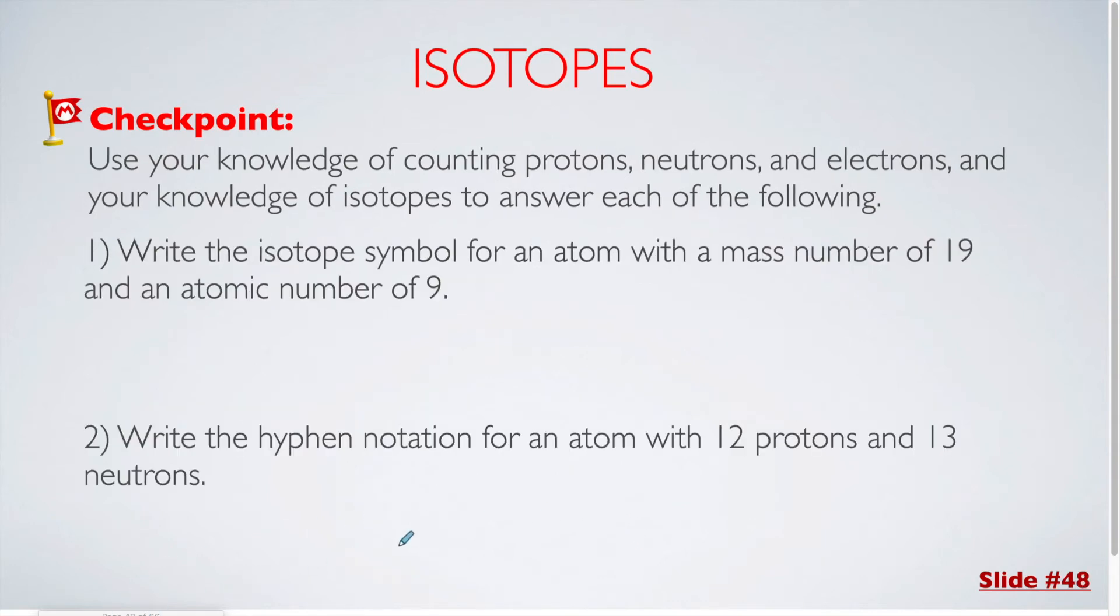For our next checkpoint question, we are going to be going in the opposite direction. Now we are given the mass number and the atomic number, and we want to write out the isotope symbol.